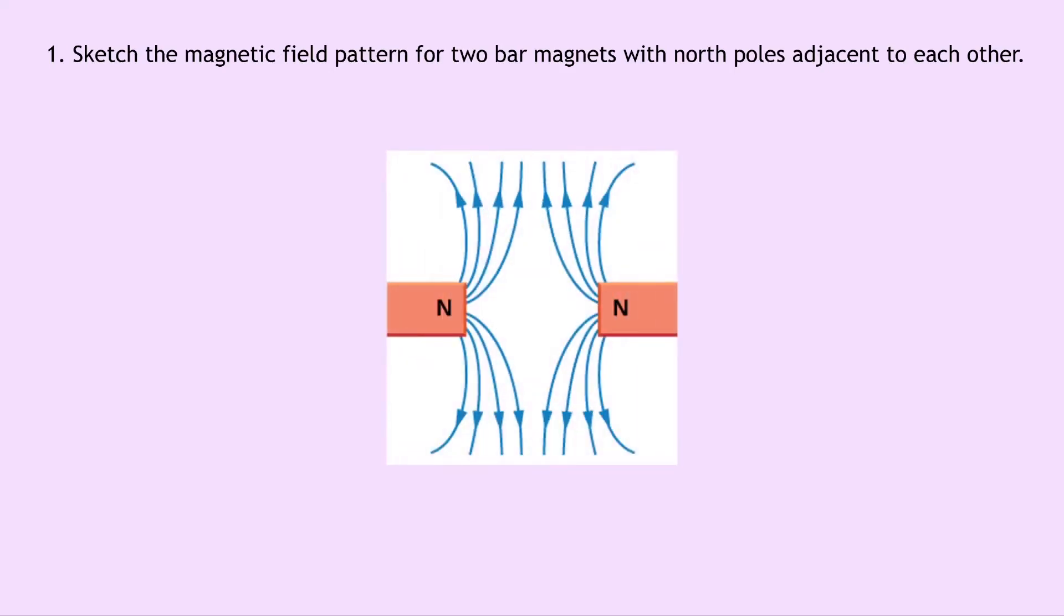Question one says to sketch the magnetic field pattern for two bar magnets with North Poles adjacent to each other. So if you do that we should get something that looks like this, where we've got the two North Poles adjacent to each other and we can see that they are repelling each other away.